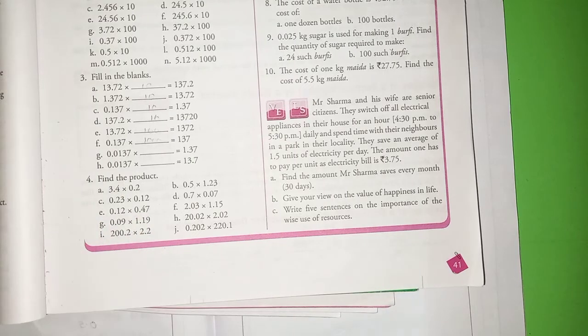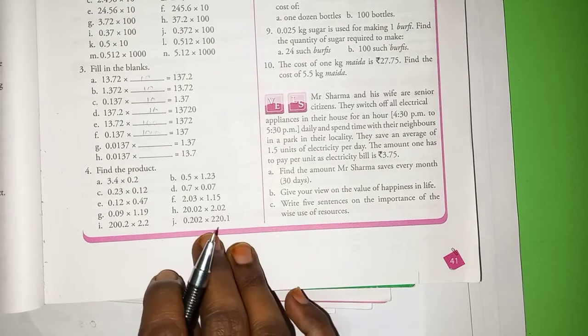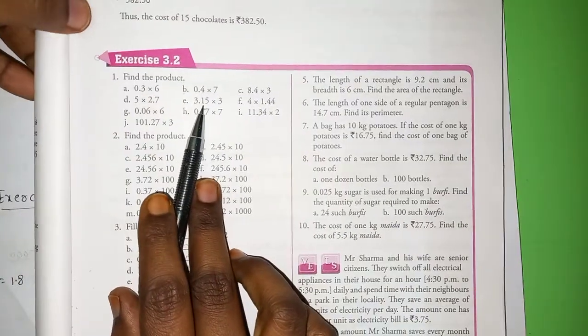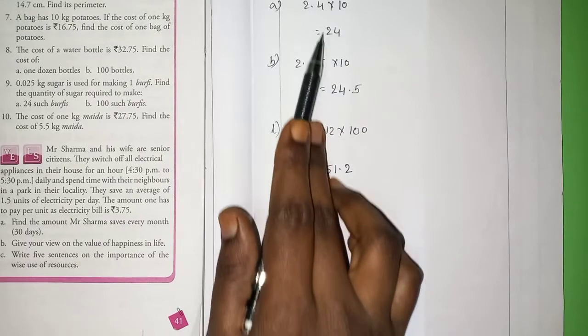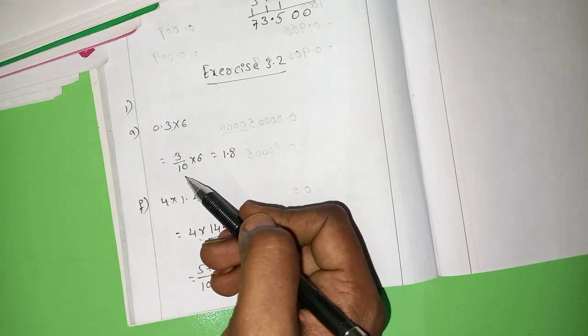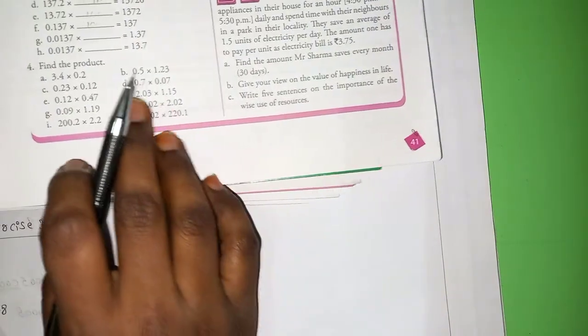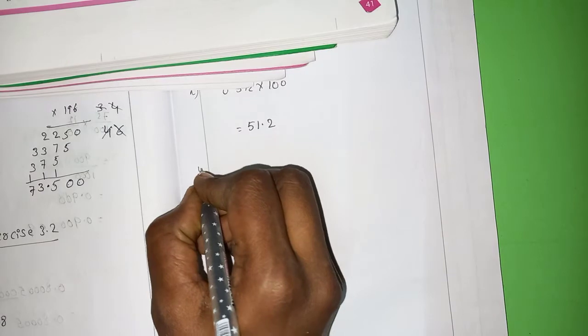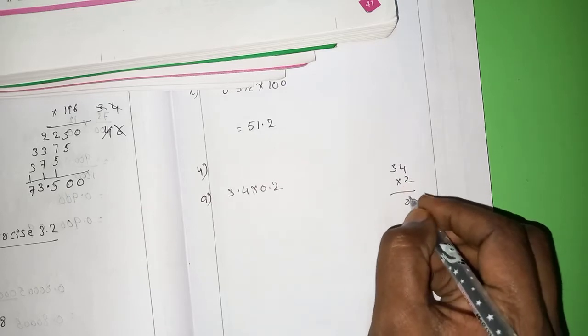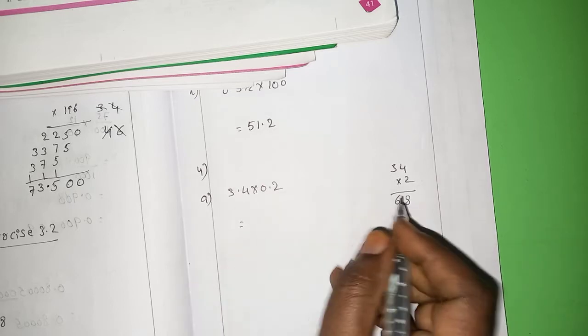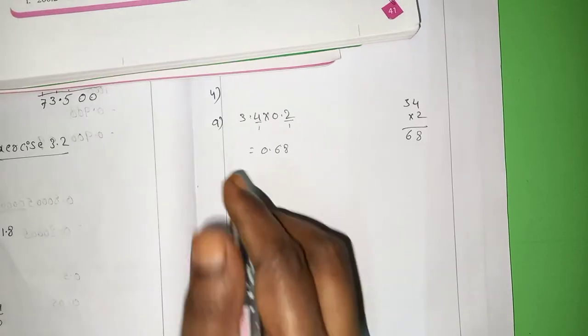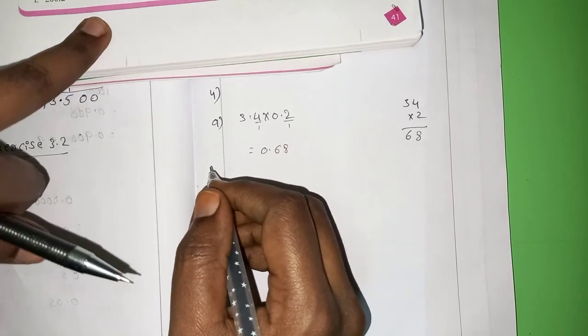Find the product. So, here also they give find the product. We already done by taking point as a zero to the denominator. And here, you have to multiply both the numbers and arrange the point according to the answer. A. 3.4 into 0.2. It means 34 into 2. 4 twos are 8. 3 twos are 6. So, answer is, after point, here 1, here also 1. So, 0.68 is the answer.